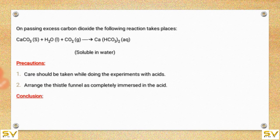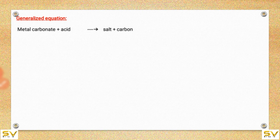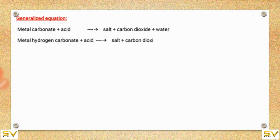Conclusion: The reaction of metal carbonates and metal hydrogen carbonates with acids gives a corresponding salt, carbon dioxide, and water. Generalized equations: Metal carbonate + acid gives salt + carbon dioxide + water. Metal hydrogen carbonate + acid gives salt + carbon dioxide + water.